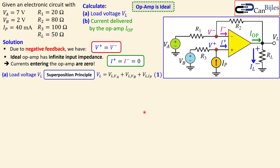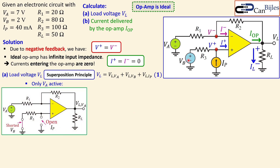We activate one source at a time and observe the resulting load voltage. Starting with Va: disable Vb and Ip. A DC voltage source that is inactive becomes a short circuit, and an inactive DC current source becomes an open circuit. So Vb is shorted and Ip is open, leaving only Va in the circuit.